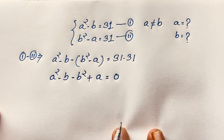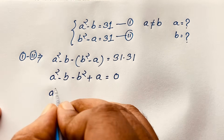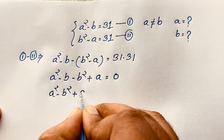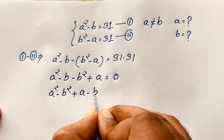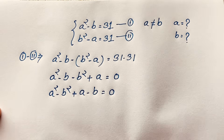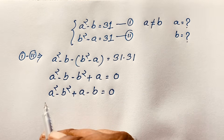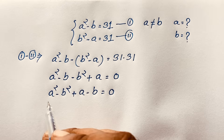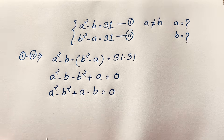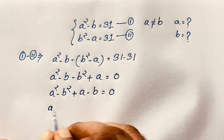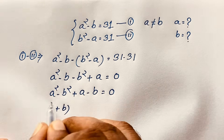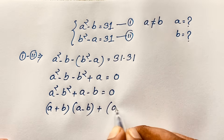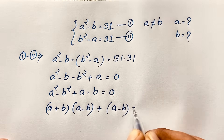Then you can see it will be A squared minus B squared, then plus A, minus B is equal to 0. Now we know that A squared minus B squared equals A plus B times A minus B. If I apply this formula here, it will be A plus B times A minus B, plus A minus B is equal to 0.